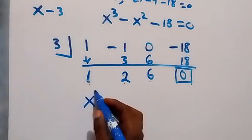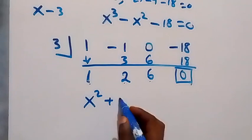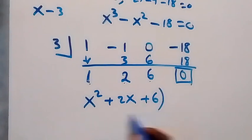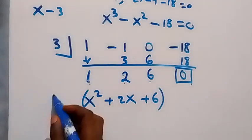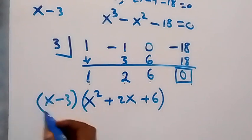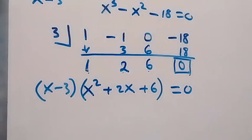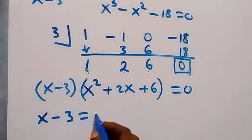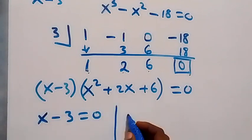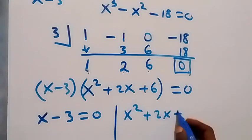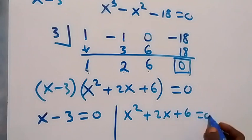The resulting coefficients give us the quadratic factor x² + 2x + 6. So we can write the polynomial as (x - 3)(x² + 2x + 6) = 0. From here we have two possible cases: x - 3 = 0, giving x = 3, or x² + 2x + 6 = 0.